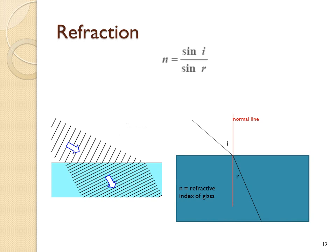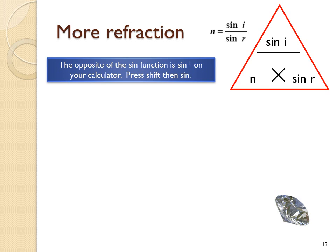The mathematics of refraction are that n, the refractive index of the material, is equal to sine i over sine r, and that could be put into a triangle to help you manipulate the formula. The opposite of the sine function is sine to the minus one. You normally press shift and then sine on your calculator.